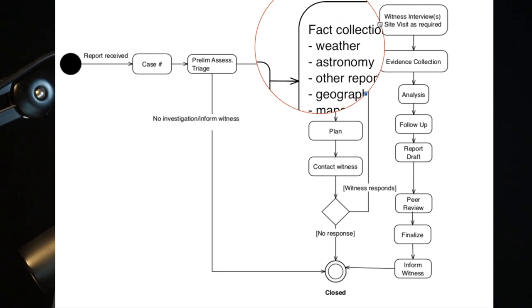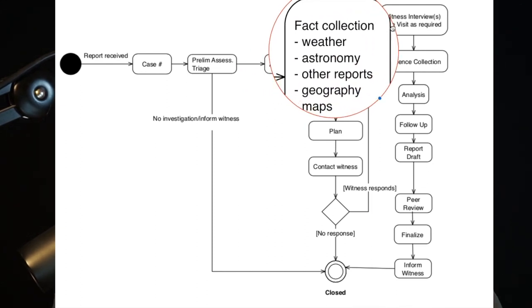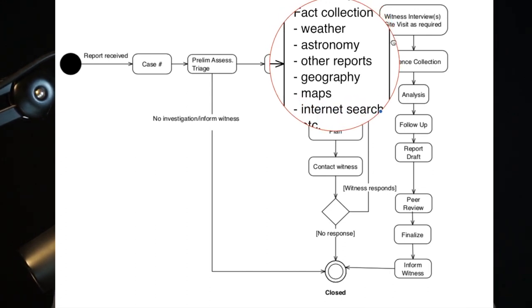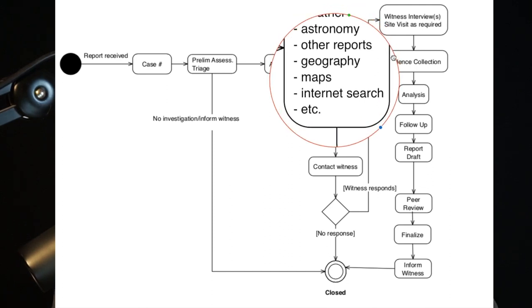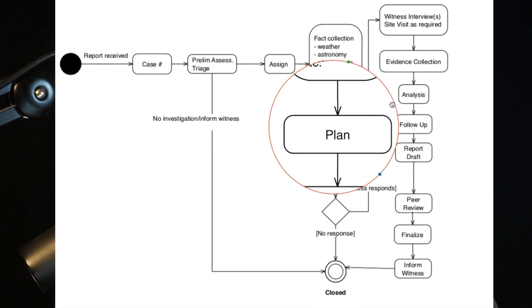It is a good idea at this point for the investigator to begin gathering facts that are to be had at the time of the report, as well as listing the missing facts. This will make the witness interview more productive. The investigator should have a rough plan for how the investigation is going to proceed, particularly if a site visit is contemplated. Writing down the plan in your case notes is a good practice.